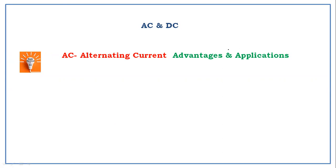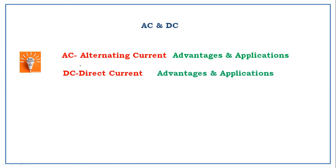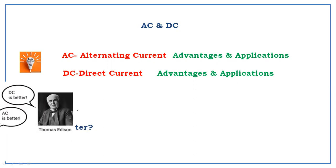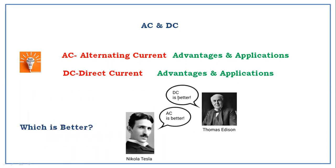After discussing alternating current, we are going to discuss what is DC current, what are the advantages of DC current, and what are the applications of DC current. And finally, we will conclude which is better — whether AC is better or DC is better. At the end of the session, we are going to conclude.